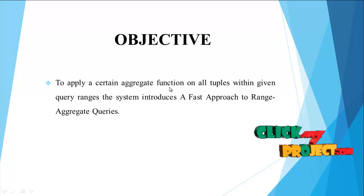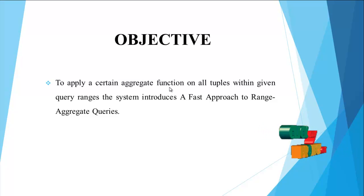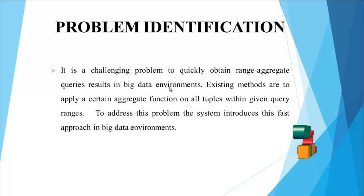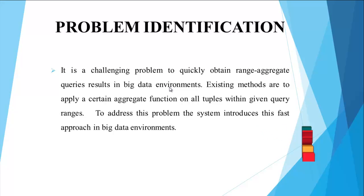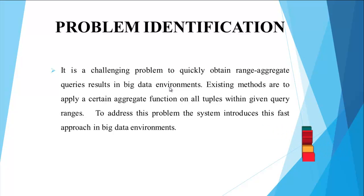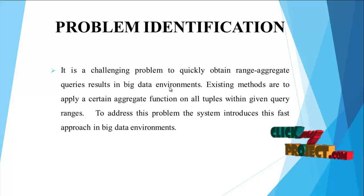Objective: To apply a certain aggregate function on all tuples within given query ranges. The system introduces a fast approach to range aggregate queries. Problem identification: It is a challenging problem to quickly obtain a range aggregate query result in big data environments. Existing methods apply a certain aggregate function on all tuples within given query ranges. To address this, the system introduces this fast approach in big data environments.